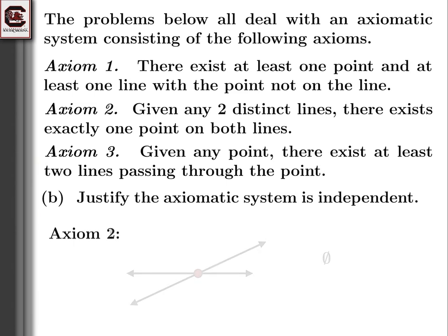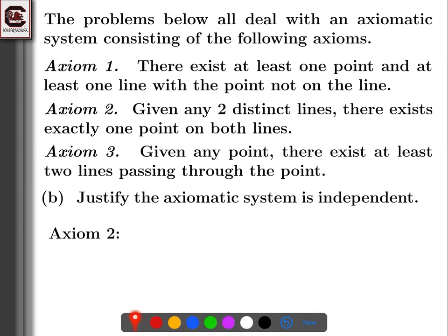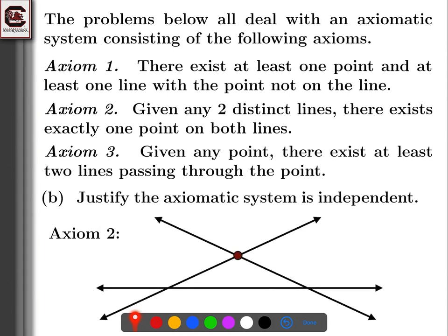Now let's look at axiom two and try to show it cannot follow from axiom one and axiom three, by finding a model that satisfies axiom one and axiom three but not axiom two. We can recall the construction from earlier: we had a picture where we said axiom two wasn't true but the other axioms were. We had the line and point making axiom one true, then skipped axiom two and added two lines to make axiom three true. So axiom three holds but axiom two does not — this model satisfies axiom one and axiom three but not axiom two.